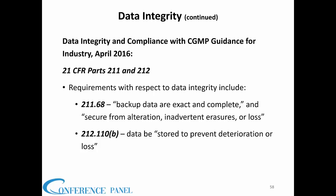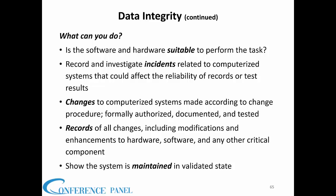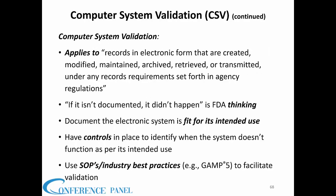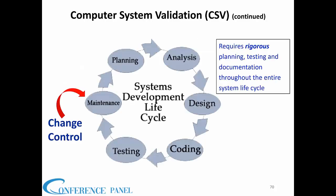Data integrity guidance was first drafted in 2016 and issued in December 2018. Common deficiencies include failure to prevent unauthorized access or changes to data and inadequate controls to prevent omission of data. You should ask: is the software and hardware suitable to perform the task? You should find that out during validation. The guidance for validation came out in 1983 — 41 years ago — and applies to records in electronic form created, modified, or acted upon based on agency regulations.